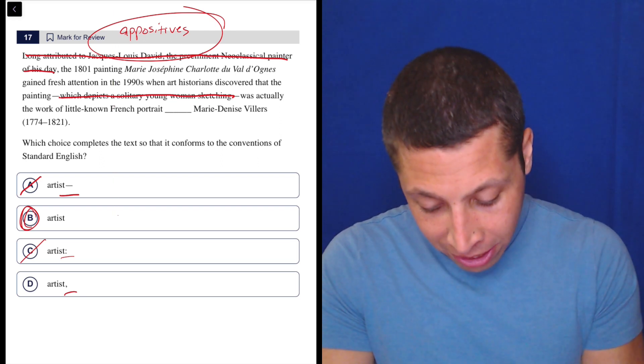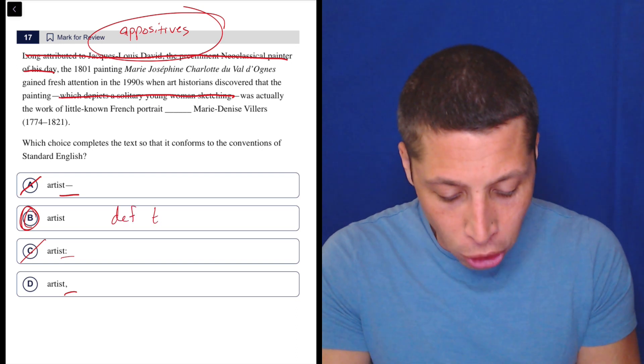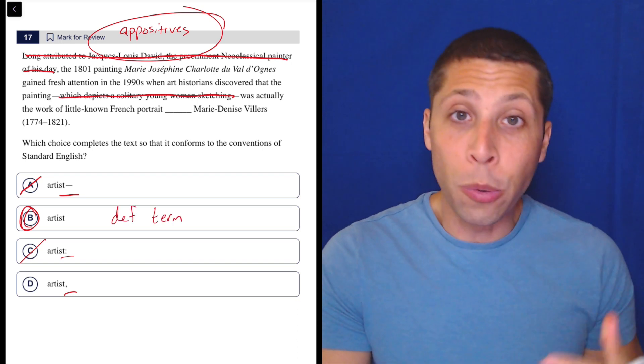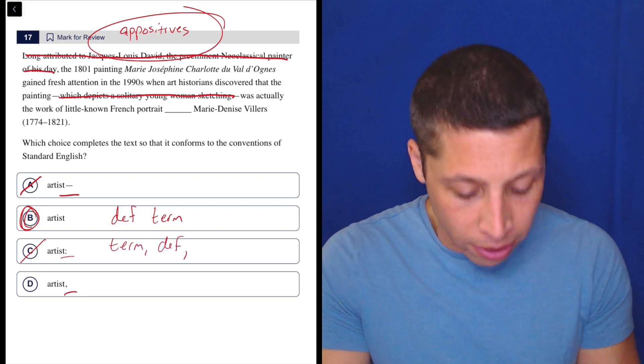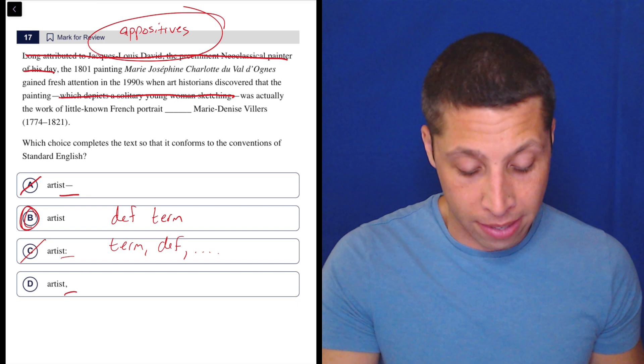the definition first, then the term, we don't use any commas at all. But if the term comes first, then the definition, we would put two commas before we go back to the sentence.